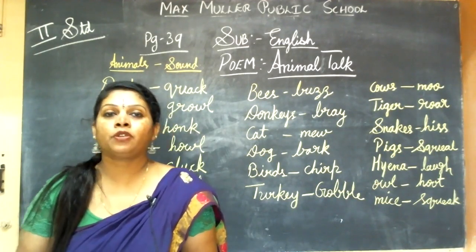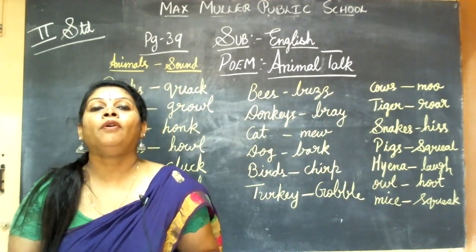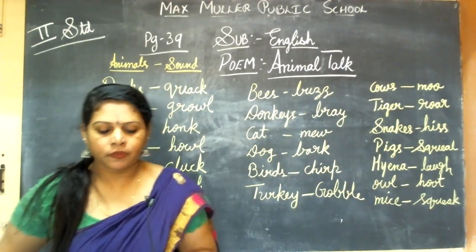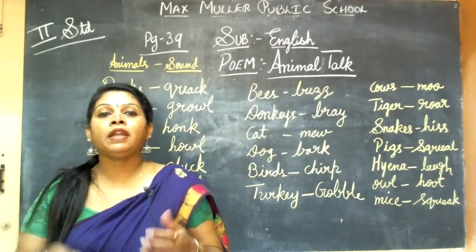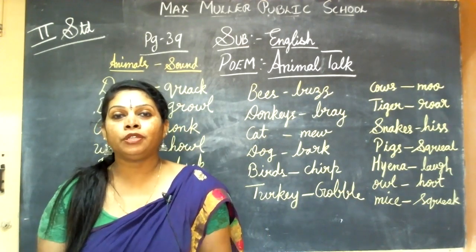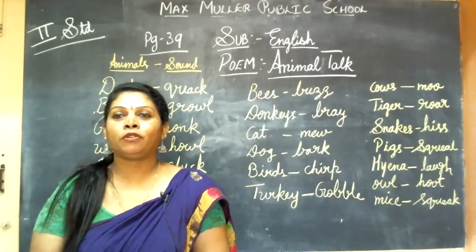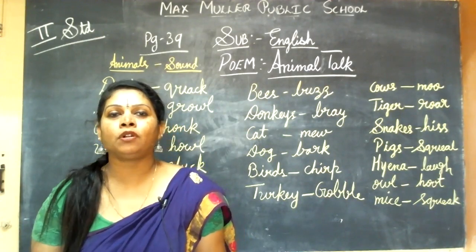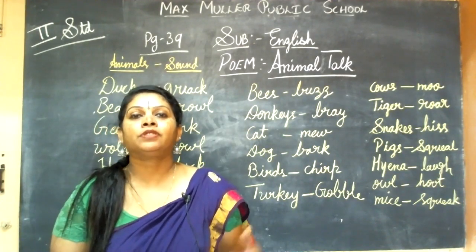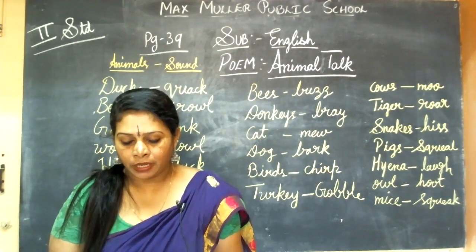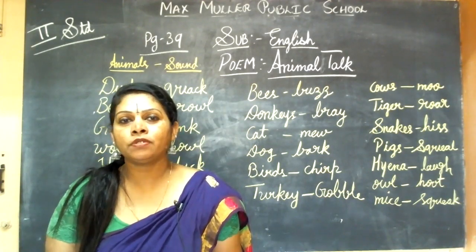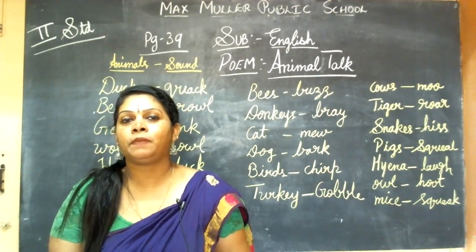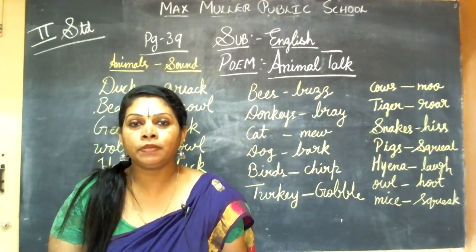Now you can see the pictures of all these animals in the textbook. Whatever sounds they have given, all those animal pictures you can see around this poem. The overall meaning of the poem is: even animals can talk. Not only human beings, animals also speak. But their way of speaking is different. We have got words to speak and explain, but animals have got only sounds to express their feelings.